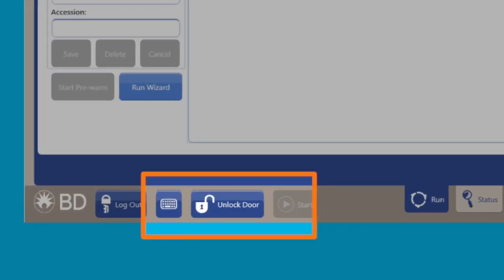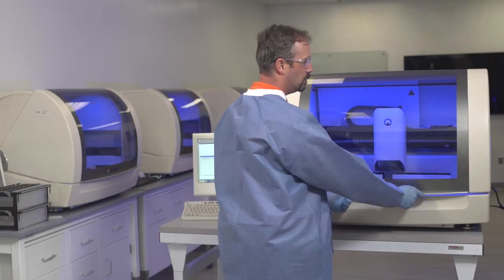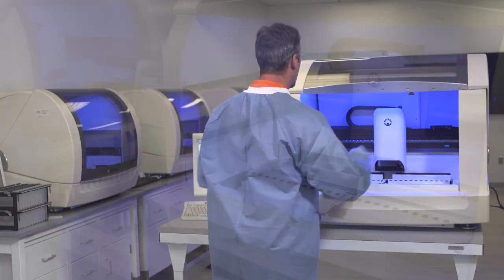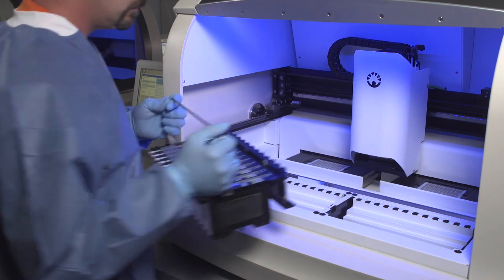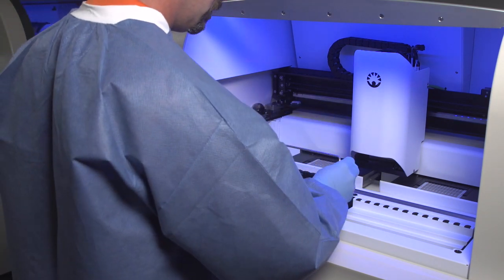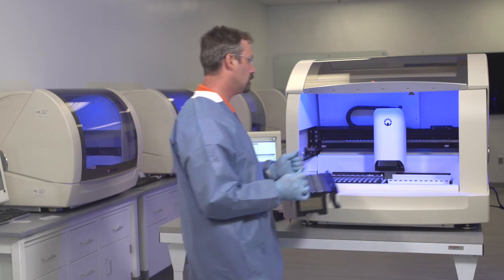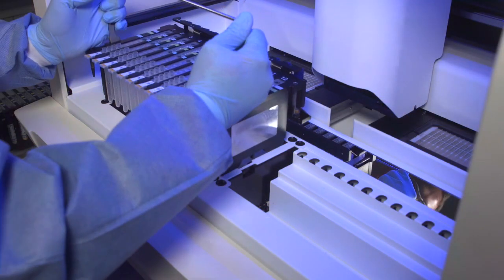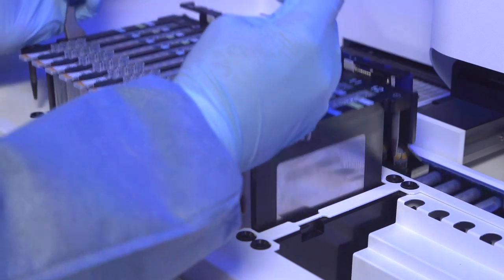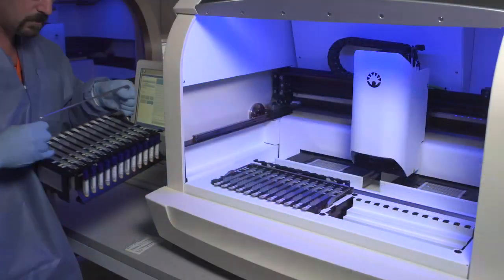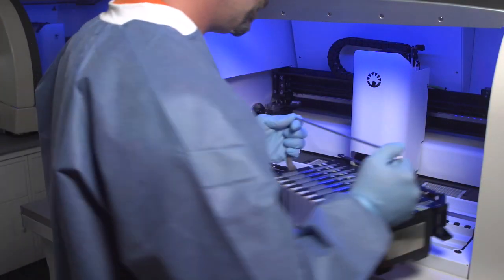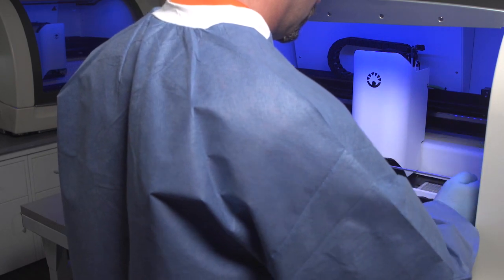If you haven't already done so, click or tap the unlock door, which will allow you access to the BDMAX System. Load Racker Racks onto the BDMAX System. Position sample rack A on the left side and sample rack B on the right side of the instrument. The sample rack has four pegs, one on each corner, to guide and secure the rack in place. Use both hands to hold the racks by the handle. The tubes will face opposite you.